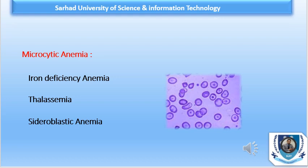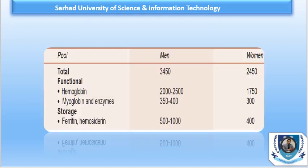Iron is required for the synthesis of normal heme of hemoglobin, and its deficiency leads to decreased erythropoiesis and finally anemia. Iron deficiency anemia, commonly known as IDA, is the most common nutritional disorder in the world.